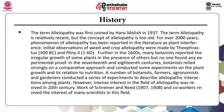Further in the 1600s, many botanists reported the irregular growth of some plants in the presence of others but no one found any experimental proof. In the 17th and 18th centuries, botanists relied strongly on a comparative approach and conducted experiments on plant growth and its relation to nutrition. Number of botanists, farmers, agronomists and gardeners conducted a series of experiments to describe allelopathic interactions among plants. Intense interest in the field of allelopathy was revived only in the 20th century, with the work of Schreiner and Reed in 1907 and 1908, which revived the interest of many scientists in this field.